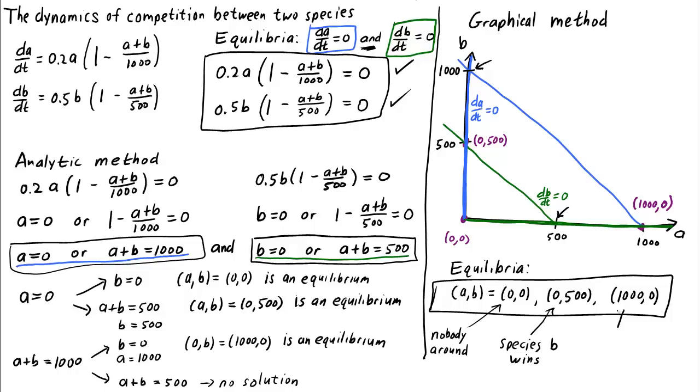The third equilibrium, (1000,0), corresponds to species A winning. In this case, there are no individuals of species B around, and A is at its carrying capacity.